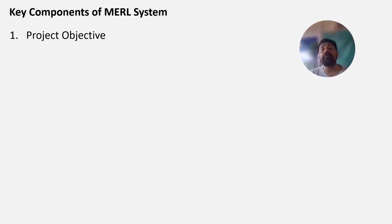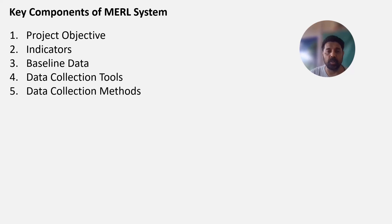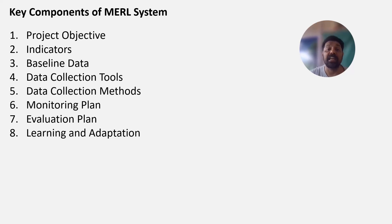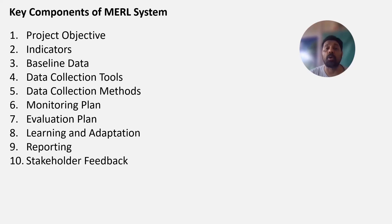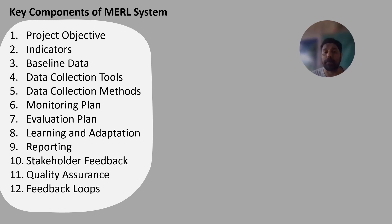The key components of an MNE system include: project objectives, indicators, baseline data, data collection tools, data collection methods, monitoring plan, evaluation plan, learning and adaptation, reporting, stakeholder feedback, quality assurance, and feedback loops. These are the different components of an MNE or MERL system.